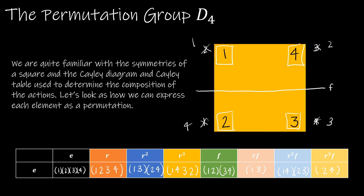I want to point out that just as before, we said D4 has two generators: R and F. Could there be other generators? Yes — you could use any rotation that's not R² and any reflection, and that would generate the set as well. Taking R, R², R³, then F, RF, R²F, R³F gives every single element in the group.